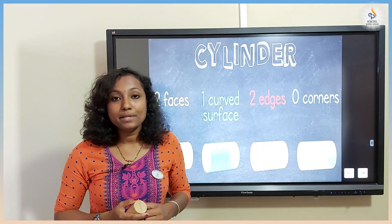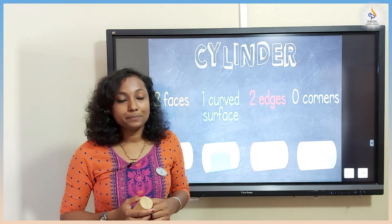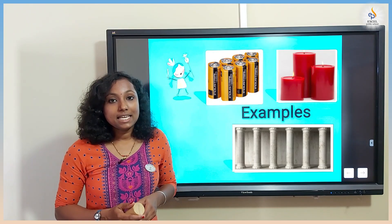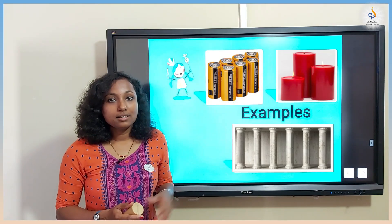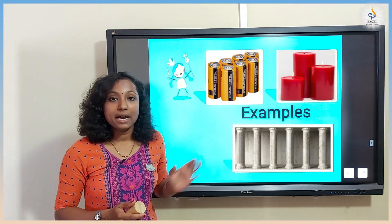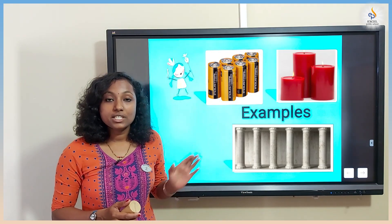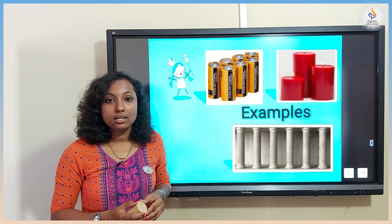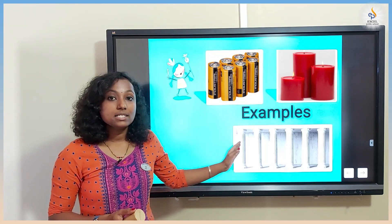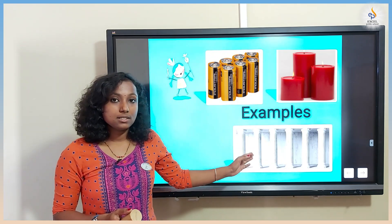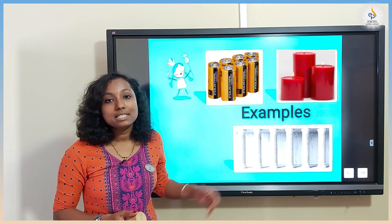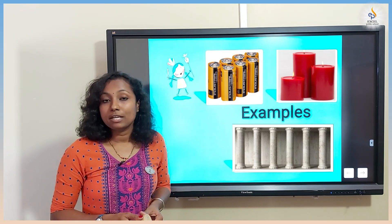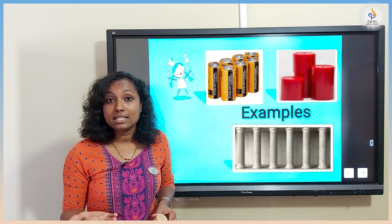Now look at some examples for cylinder. Here you can see there is a battery which is cylindrical, there is a candle which is cylindrical, and these are some pillars — they are also cylindrical.